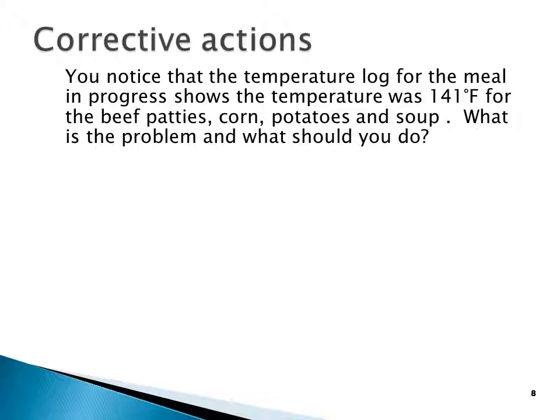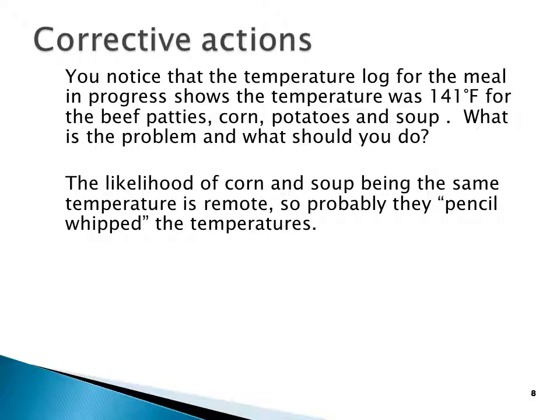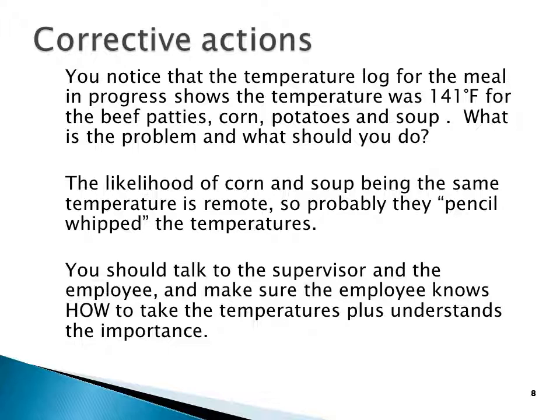You notice that the temperature log for the meal in progress shows the temperature was 141 degrees for the beef patties, the corn, the potatoes, and the soup. What's the problem and what should you do about it? The likelihood of corn and soup being the same temperature is remote, so they probably pencil-whipped the temperatures. What you should do is talk to the supervisor and the employee, make sure the employee knows how to take temperatures and understands the importance of actually taking them — not cheating the system.